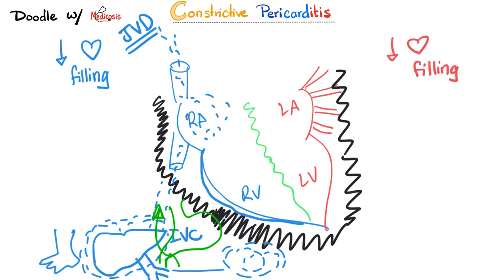Normally, if you stand up suddenly, your sympathetic nervous system constricts the veins in your lower extremities to push blood up and increase venous return. But in constrictive pericarditis, that venous return cannot reach the right ventricle — less coming in means less going out. Symptoms of low cardiac output include orthostatic hypotension, dizziness, and syncope.